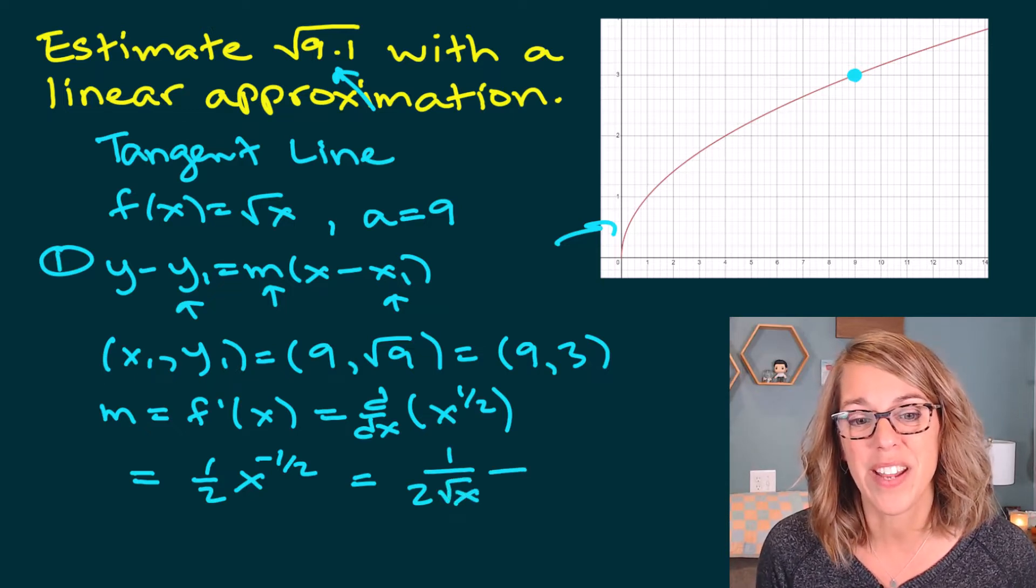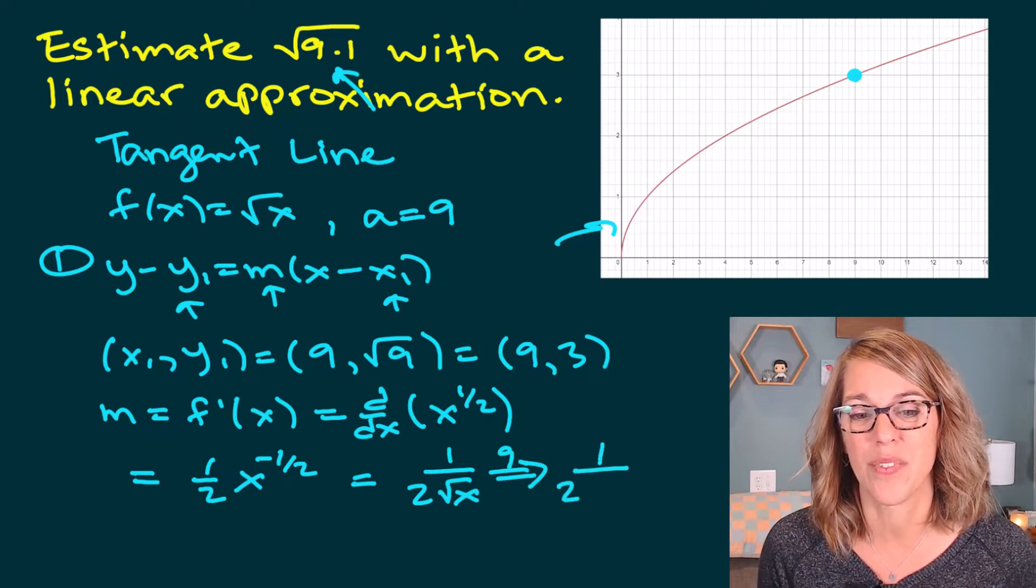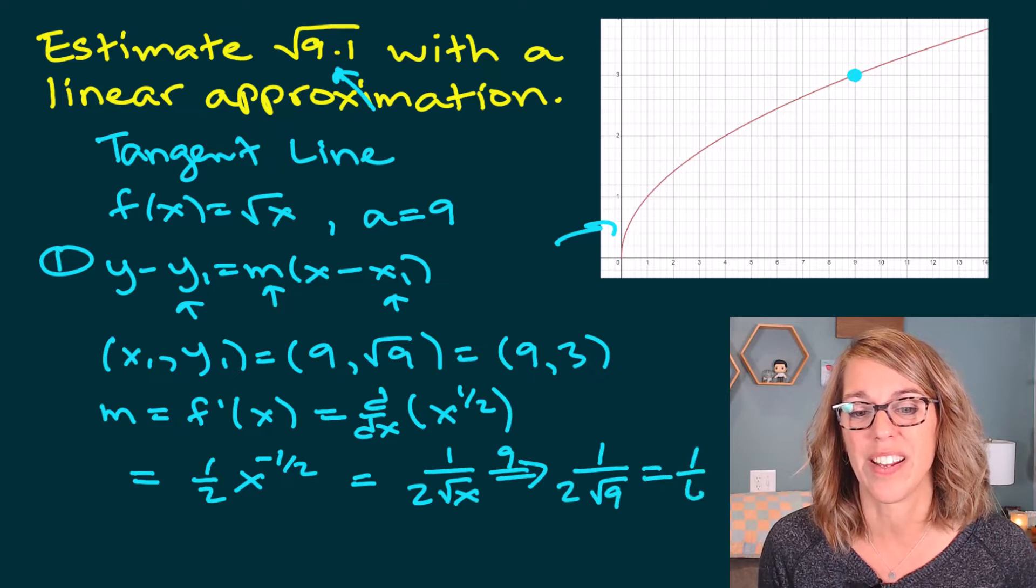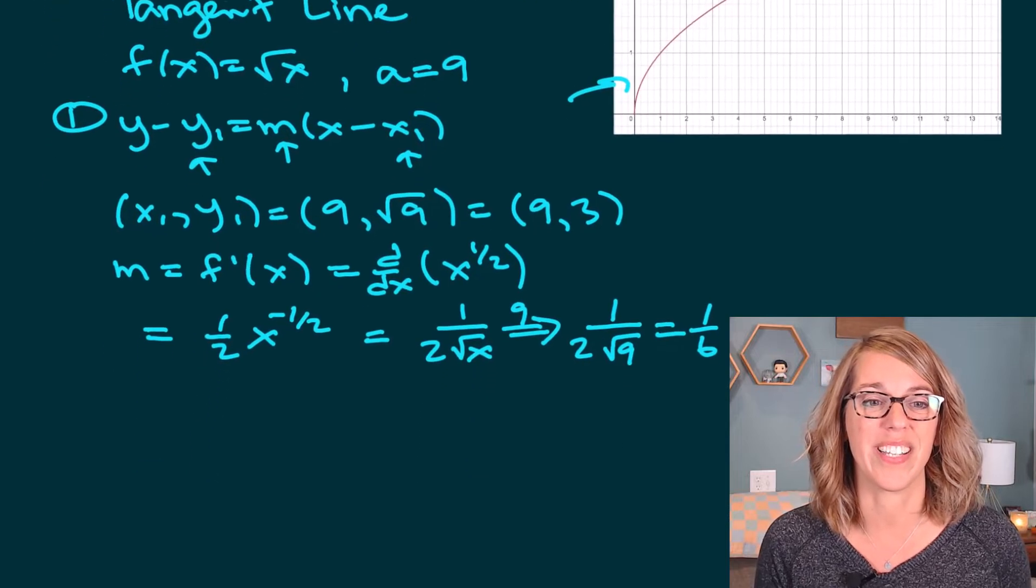I want to evaluate this at 9. So when I evaluate this at 9, it's 1 over 2√9, which turns out to be 1/6. So let's put this together into our equation.